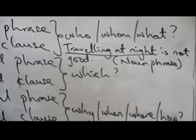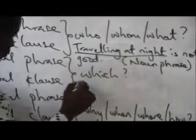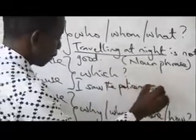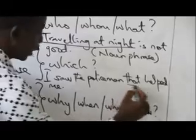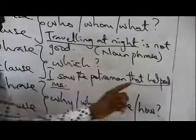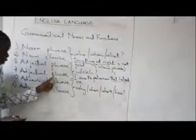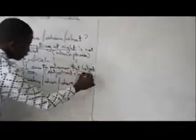We can go on with another one. Take: 'I saw the policeman that helped me' — with 'that helped me' underlined. There are many policemen, but the particular one I saw was the one that helped me. The question is 'which policeman did I see?' — the one that helped me. So 'that helped me' answers question 'which,' making it adjectival. Because it has a finite verb, it becomes an adjectival clause.